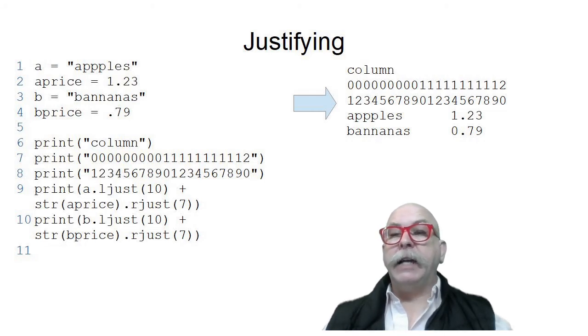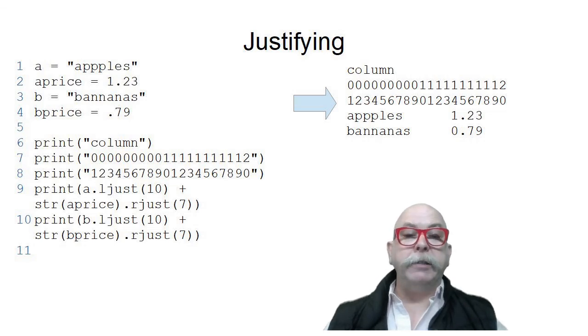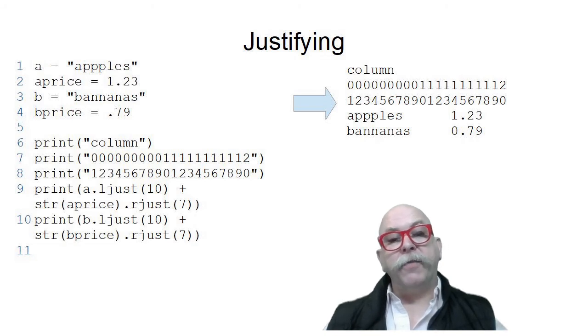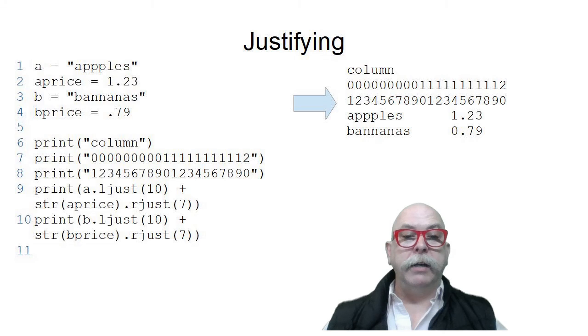Here's an example of justifying. You can see I have a couple of variables: A with apples and B with bananas and their prices. Take a look at line nine, where I take the word apples and ljustify it to 10. I then put out the price, converting it from a float to a string, and then rjustify it to seven. So it's a 17 character-wide string that's output. And then you can see bananas, I use the same ljust and rjust. You can see they line up very nicely in rows and columns when they're displayed.